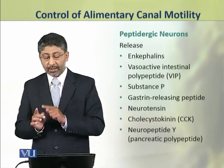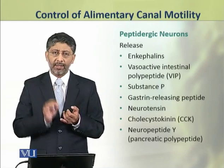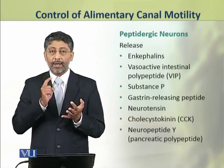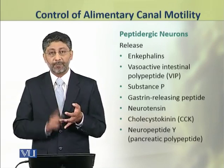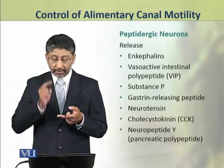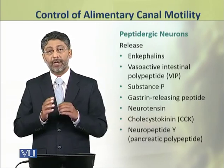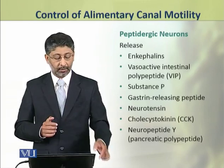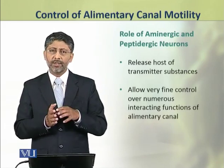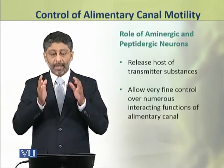The peptidergic neurons which innervate the lining of smooth muscle of the gastrointestinal tract release many substances as transmitters, for example enkephalins, vasoactive intestinal polypeptide, substance P, gastrin-releasing peptide, neurotensin, cholecystokinin, and neuropeptide Y which is also called pancreatic polypeptide. The release of this host of transmitter substances allows a very fine control over the numerous interacting functions of the alimentary canal.